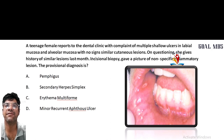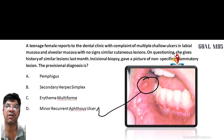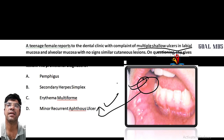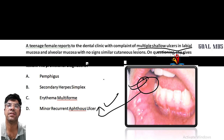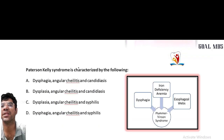A teenager presents to the dental clinic with a complaint of multiple shallow ulcers in labial mucosa and alveolar mucosa with no similar signs in cutaneous regions. Incisional biopsy gives a picture of non-specific inflammatory lesions. The provisional diagnosis is minor recurrent aphthous ulcers — multiple shallow ulcers confirm this diagnosis.